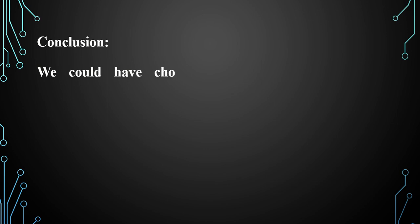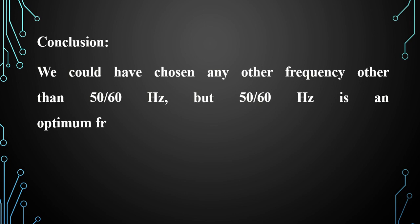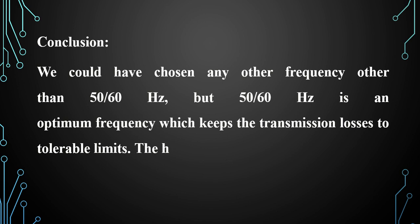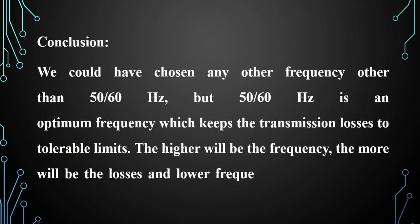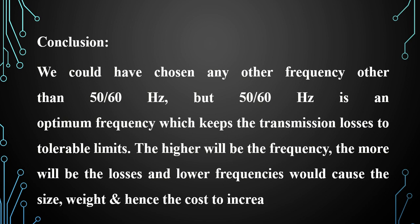Conclusion: We could have chosen any other frequency other than 50 or 60 Hz. But 50 or 60 Hz is an optimum frequency which keeps the transmission losses to tolerable limits. The higher the frequency, the more will be the losses, and lower frequencies would cause the size, weight, and hence the cost to increase.